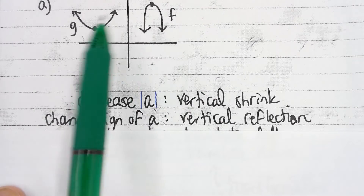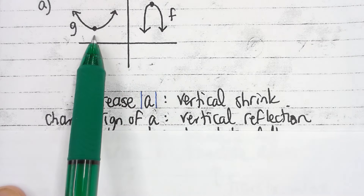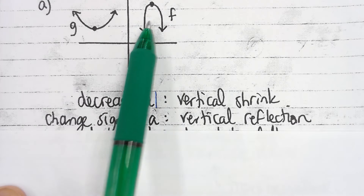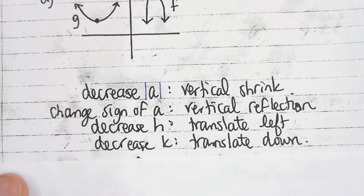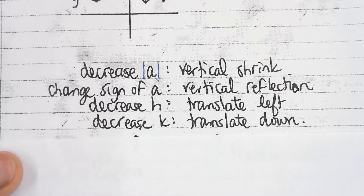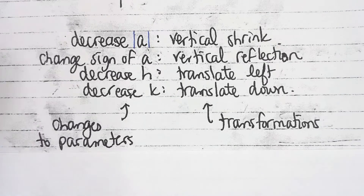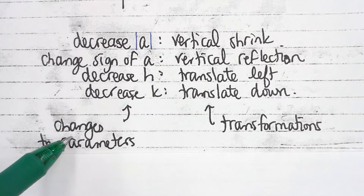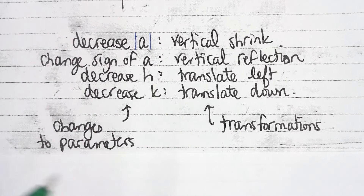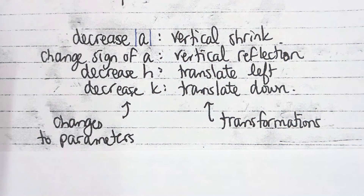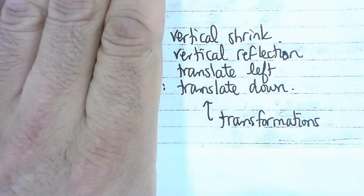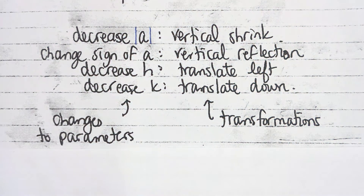We can also talk about h. Going from f to g, you moved it to the left, which means we've decreased h. The vertex moved down, which means we've decreased k. Decrease h: translate left. Decrease k: translate down. The changes to the parameters are on the left; the transformations are on the right. If the question only asks for transformations, just write those. If it only asks for parameter changes, just write those.